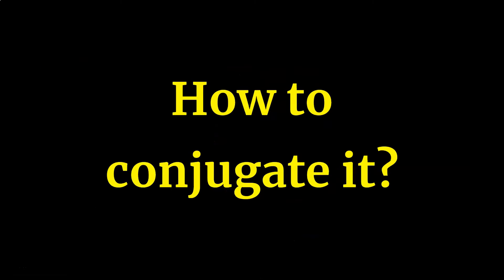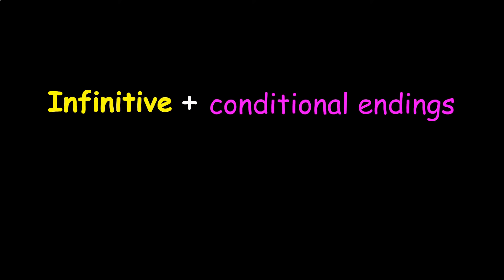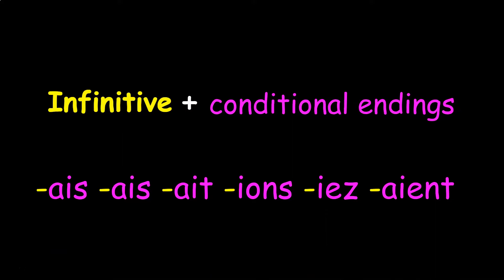How do you conjugate le conditionnel présent? You take your verb's infinitive form — its unmodified, unconjugated, original form — and then you add the conditional endings, which are the exact same as l'imparfait. Depending on the subject, these endings are: -ais, -ais, -ait, -ions, -iez, and -aient.